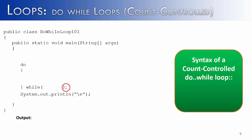A do-while loop has the word 'do' at the top, and you'll see that the 'while' is still there but it's at the bottom of the loop as opposed to the beginning. You'll also notice that there's a semicolon after the while statement. That's because in a do-while loop, the condition is checked at the end of the loop, as opposed to the beginning.